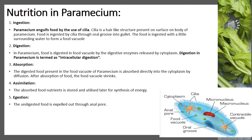Now let's talk about nutrition in paramecium. Paramecium is a unicellular organism that also follows the holozoic mode of nutrition. The first step is ingestion: with the help of hair-like structures called cilia present on the surface of the body, it engulfs its food. Food is ingested through the oral groove into the gullet along with a little surrounding water, forming a food vacuole. The second step is digestion, where food in the vacuole is digested by digestive enzymes released by the cytoplasm.